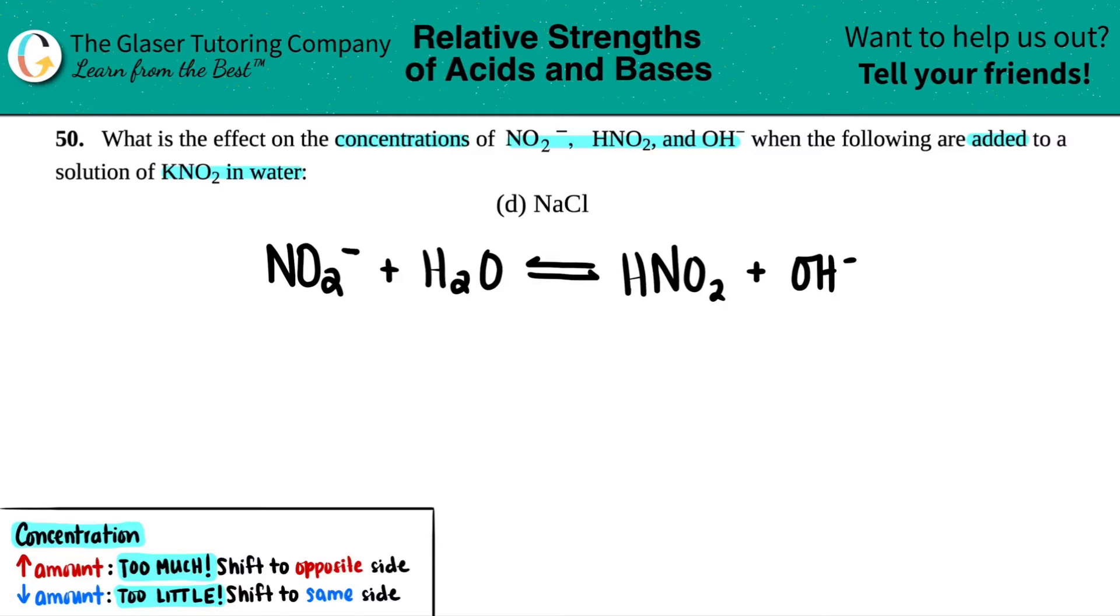So 50A, if you guys want to have a refresher on why this equation is this equation, go back to that one. But we're just going to be using this to figure out what the effect of the concentrations are: NO2 minus, HNO2, and OH minus.